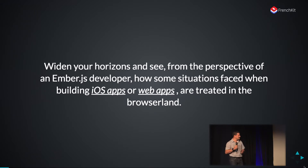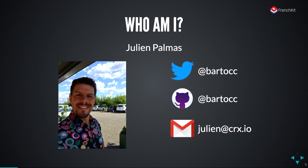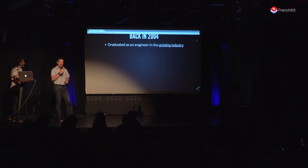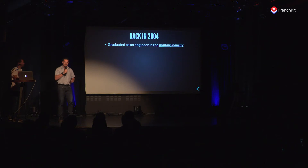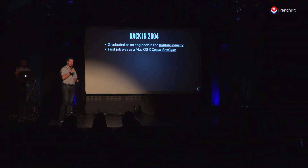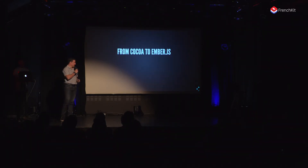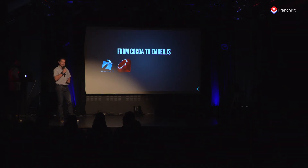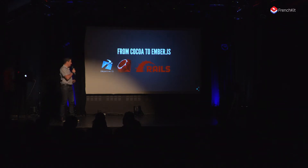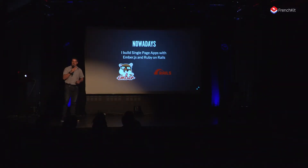You're going to see some JavaScript this morning. So I'm Julian — you can find me on Twitter and GitHub. To give you a little background: I graduated in 2004 as an engineer in the printing industry, and my first job was actually a Cocoa application developer. I transitioned from Objective-C, which I really liked, to Ruby, because I found interesting similarities between the two languages. Then I moved to web app development with Ruby on Rails, and I followed Yehuda Katz, a core committer of Ruby on Rails, who created Ember.js in 2011 or 2012. Nowadays I build single-page applications with Ember.js on the front end and Ruby on Rails on the back end.